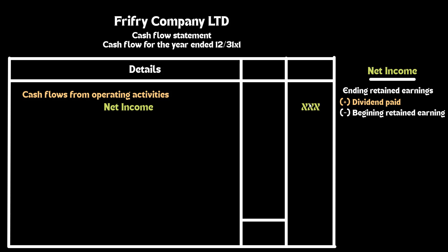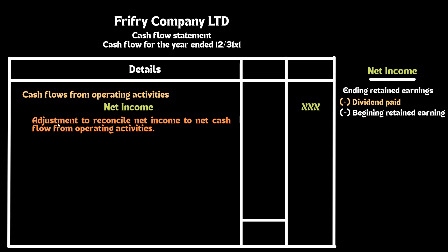This will give you the net income for the period. Then you have to do some adjustments to this net income to transfer the amount to the cash basis. These adjustments come with the heading: Adjustment to reconcile net income to net cash flow from operating activities. Under this heading, you'll find the four most common adjustments. If you are calculating the operating section you must look for these items first.